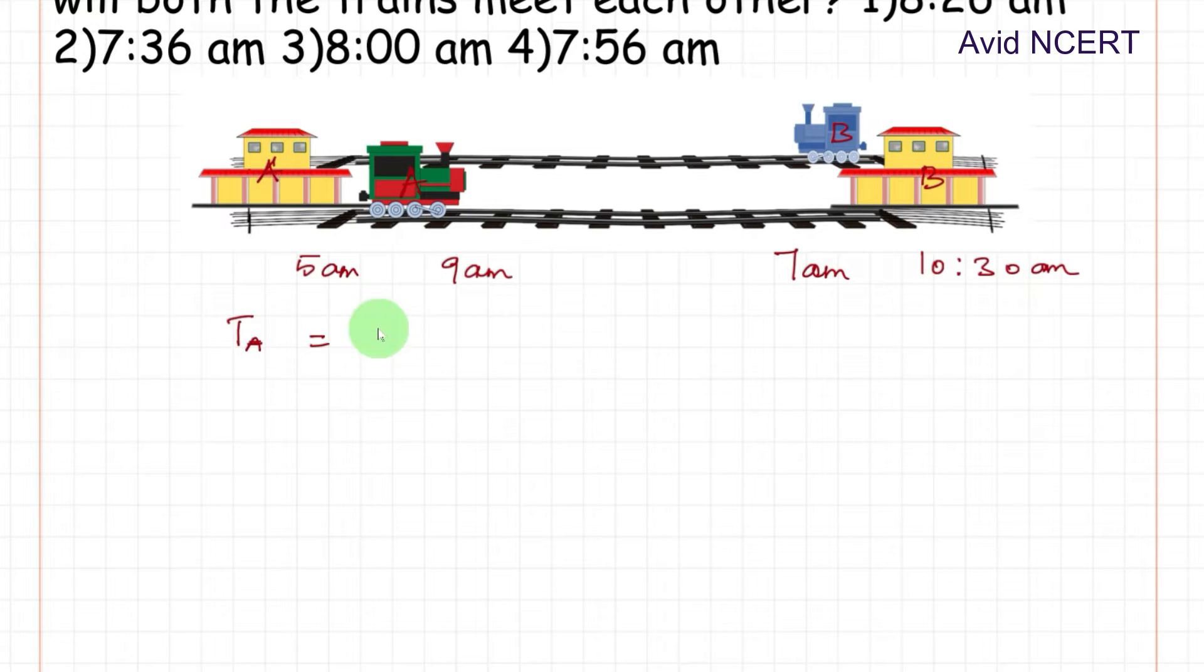Time taken by train A equals 4 hours. 9 minus 5 is 4 hours, and time taken by train B equals 10:30 minus 7, which is 3 and 1/2 hours. So for any train problem, the formula we need to know is distance equals speed into time.